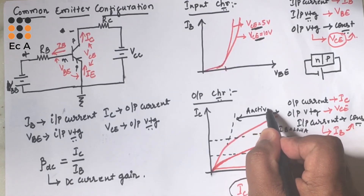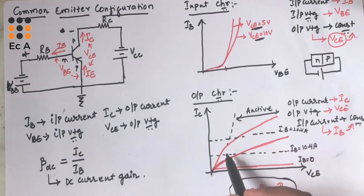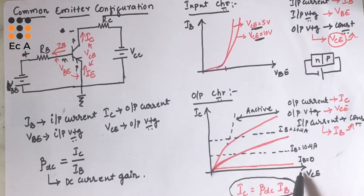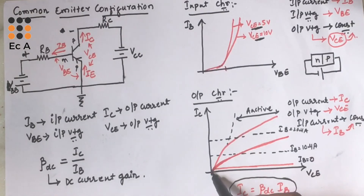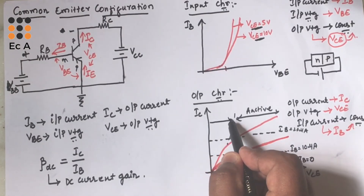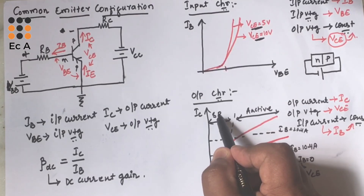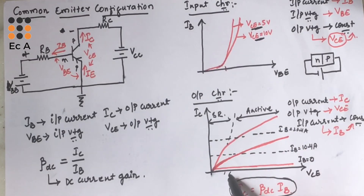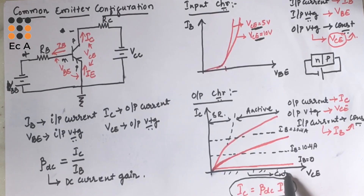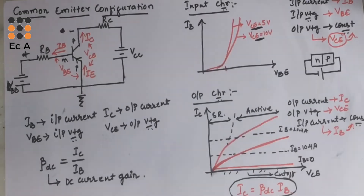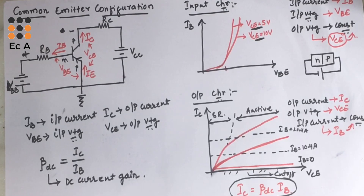The region where the current becomes zero as VCE is made positive is called the saturation region. The region where the transistor is not conducting is called the cutoff region. Hope you have understood the topic, thank you.